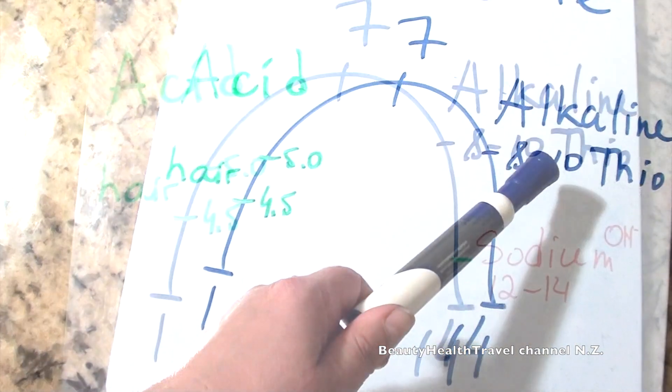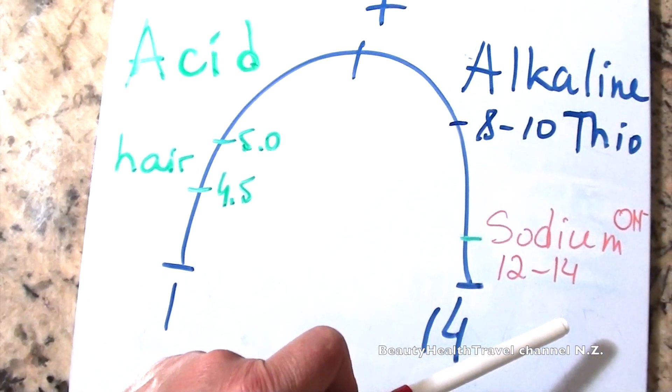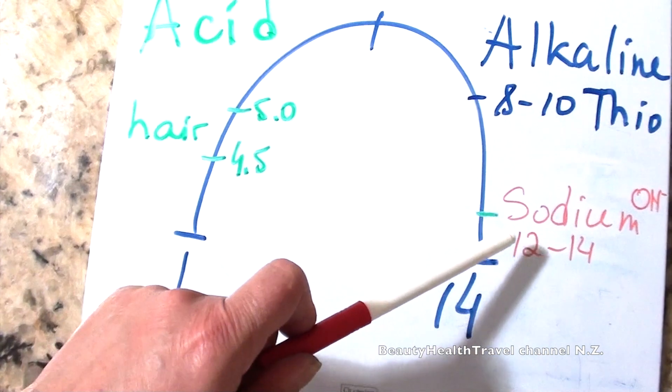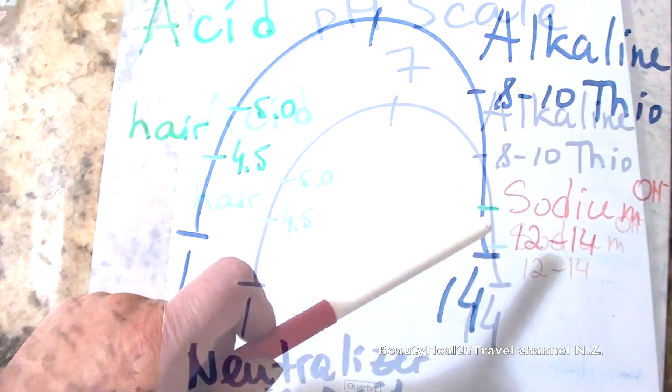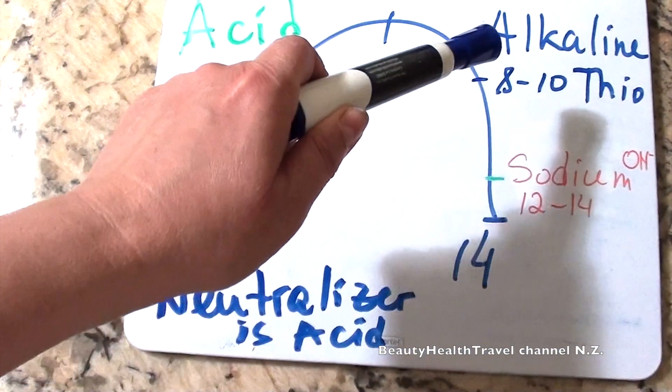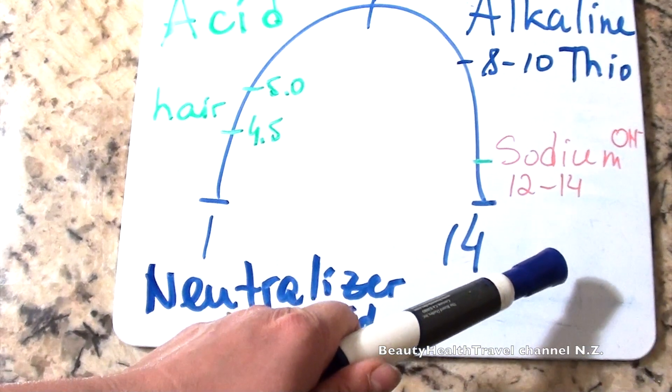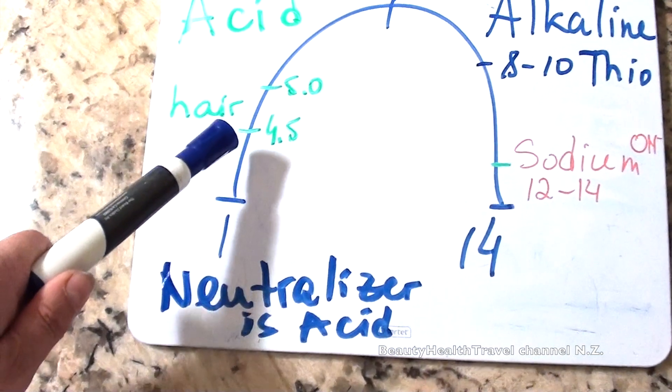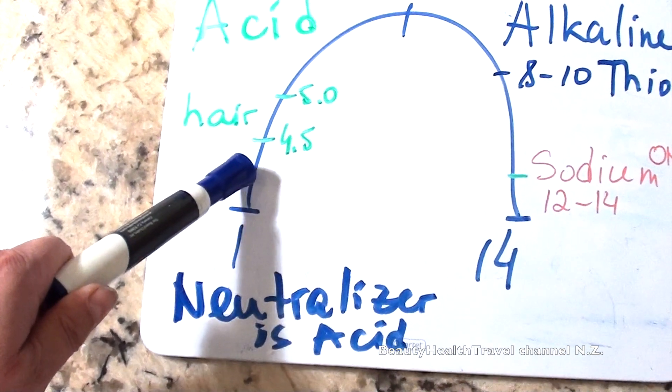Sodium hydroxide is from 12 to 14. That's pretty high. Hair again is 4.5 to 5.0. So hair that is exposed to sodium hydroxide will go very far on the pH scale. Now neutralizer is acid. So when we apply thio or sodium hydroxide relaxer, we have to neutralize it. We have to bring it back. Neutralizer could be from 5 to 7, sometimes even 3. What else is this 3?